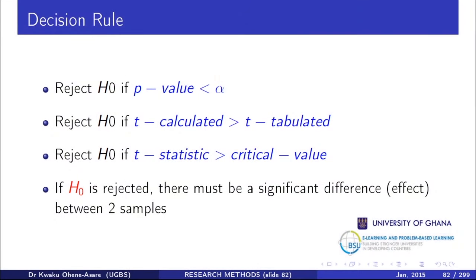The p-value is the actual mistake, and alpha is the expected mistake. You want the actual mistake to be smaller. When you make a smaller mistake, you have enough confidence to reject the null hypothesis. Rejecting the null means there is a significant difference between the means, because the null says there is no difference.